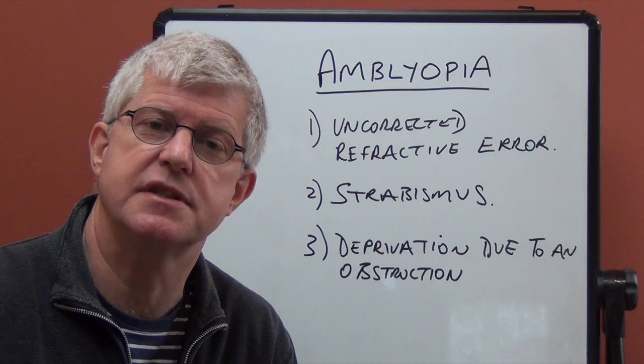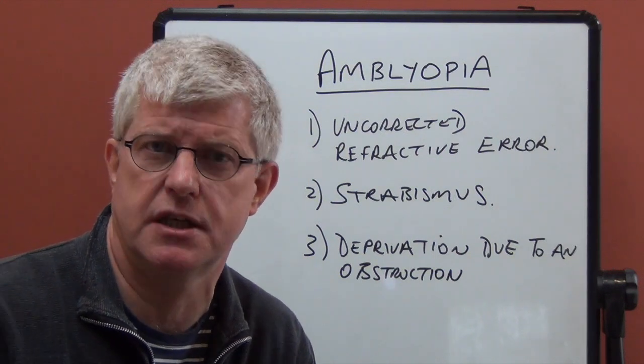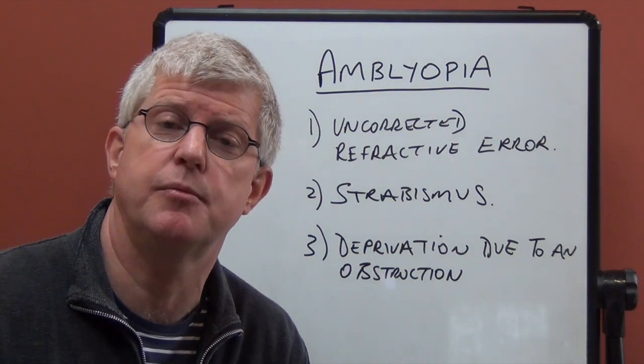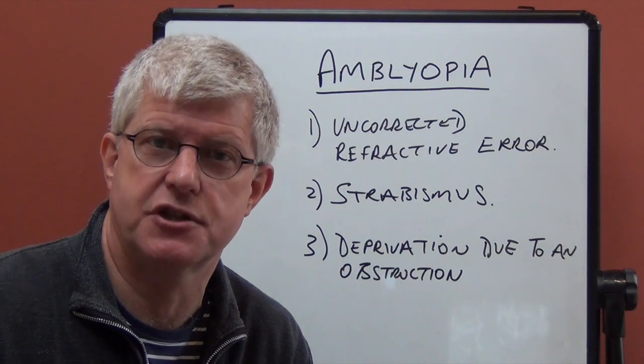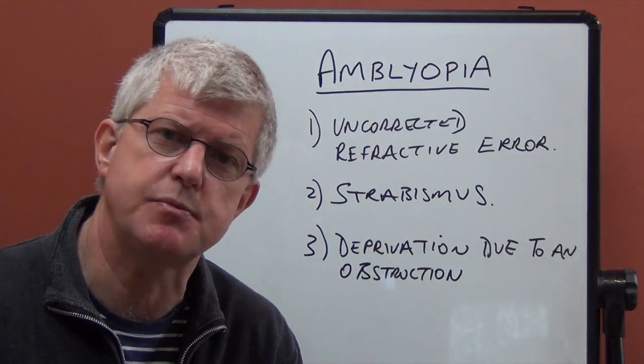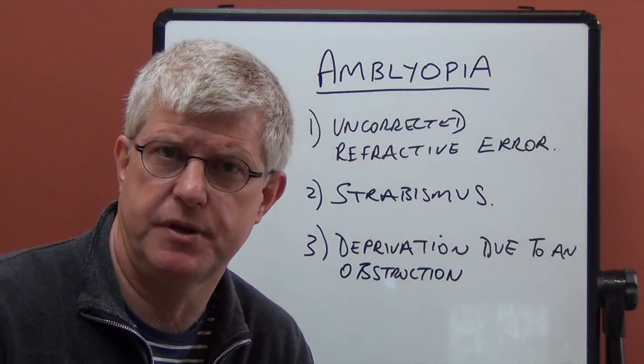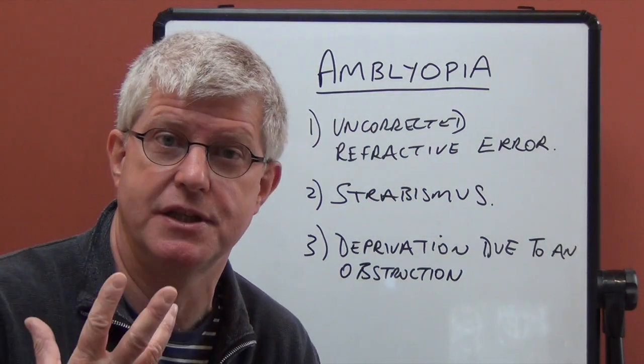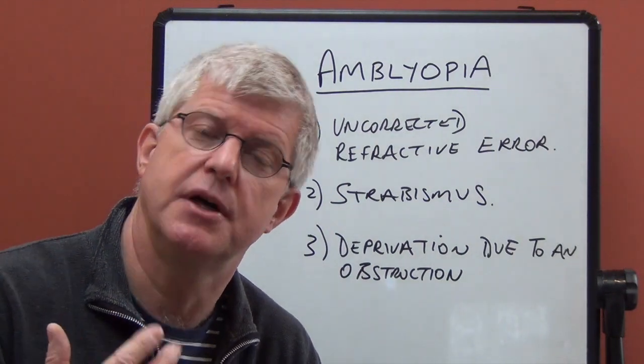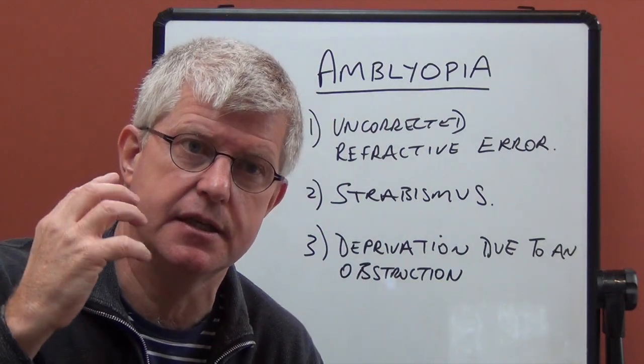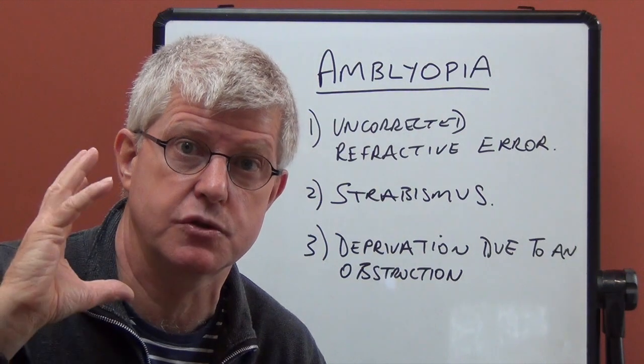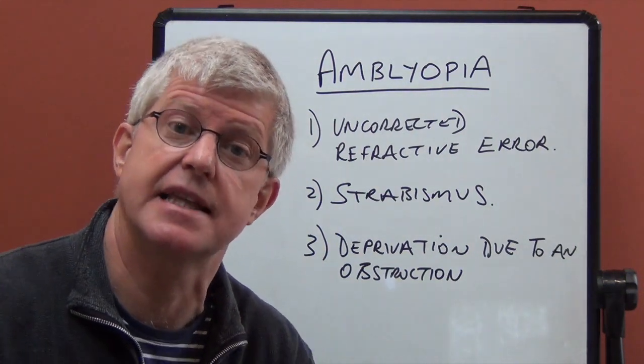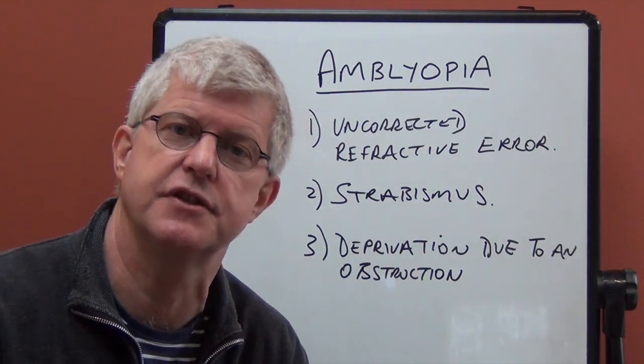So this is why we have to deal with these visual problems as early as possible. Because amblyopia is irreversible. Once the visual acuity has been lost, it cannot be recovered. Because it's not so much a deficiency with the eye itself. The eye could be quite normal. But the problem is the back of the brain, the visual cortex aspect of the brain. That's where the problem is, that's where the deficiency is.